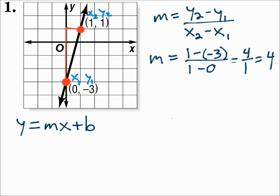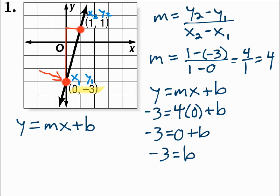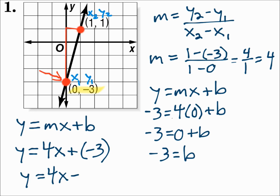Now find b — pick either point. We'll use 0, negative 3. So y is negative 3, equals m is 4, x is 0, plus b. Using the x and y from the point and the slope of 4. Solve for b. 4 times 0 is 0, and 0 plus b is b. So b is negative 3, which makes sense because the y-intercept is negative 3. Now substitute into the final answer: m is 4 and b is negative 3. y equals 4x minus 3.